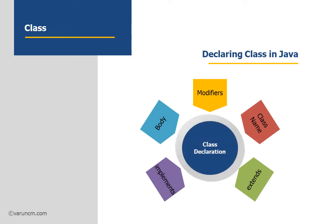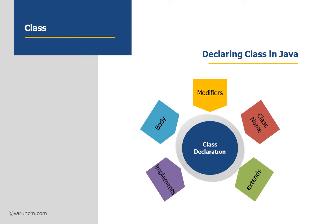Let us see the modifiers one by one. The modifier — examples for the modifier are public, private, or protected. Whatever we use, that will be present there as the modifier. This is an essential part that needs to be available while declaring the class in Java.